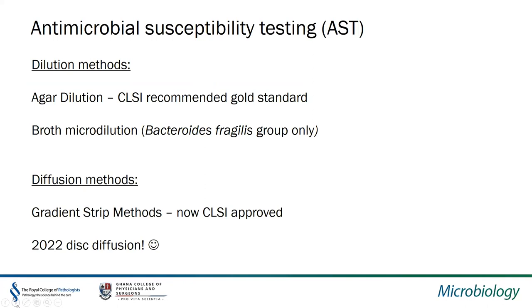Susceptibility testing for anaerobic bacteria has recently taken quite a large step forward. Previously, the only approved methods were agar dilution and gradient strips, but more recently we've been able to work alongside EUCAST to produce a disc diffusion method. I'll take you through some of these methods and their pros and cons.